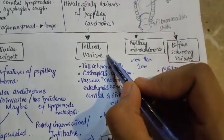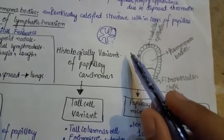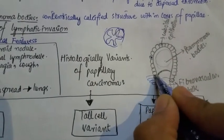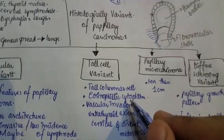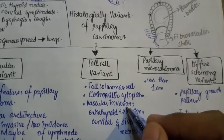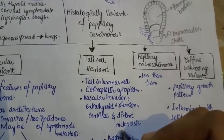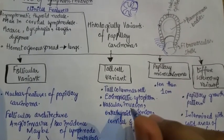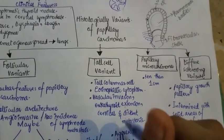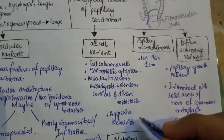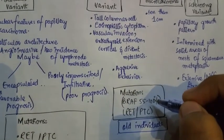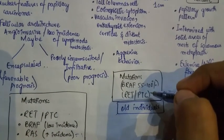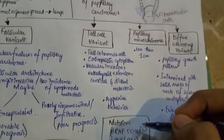The tall cell variant resembles papillary carcinoma but the cells are tall with eosinophilic cytoplasm. It also shows vascular invasion, extrathyroidal extension, and cervical and distant metastasis — features absent in the follicular variant. It has aggressive behavior and involves BRAF and RET/PTC mutations. It is present in older individuals, with no evidence of RAS mutation.